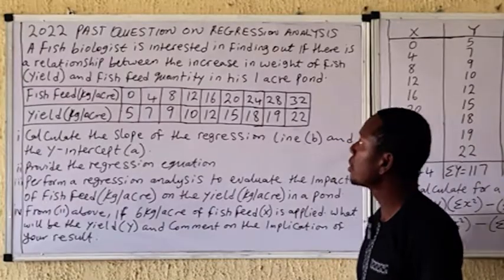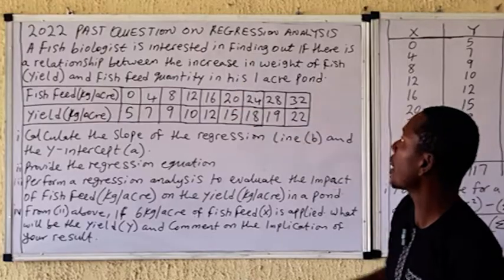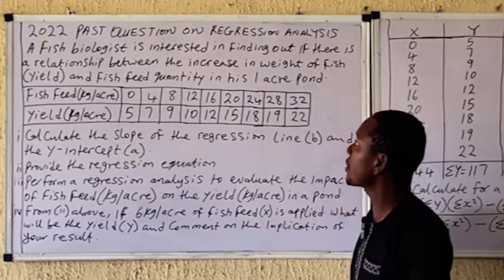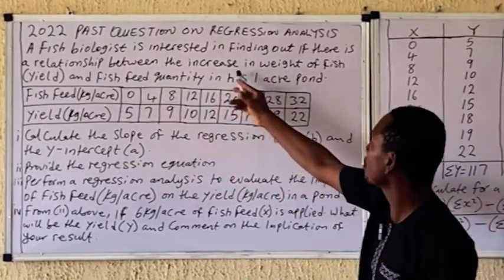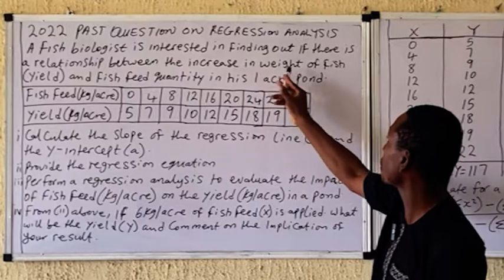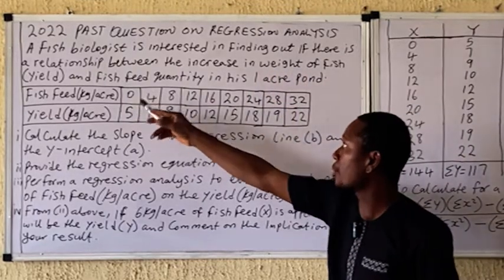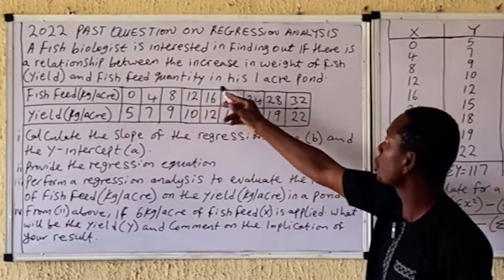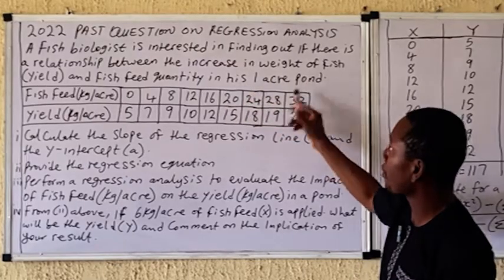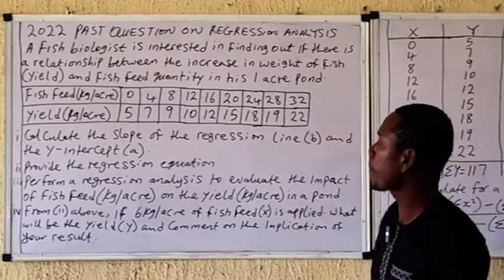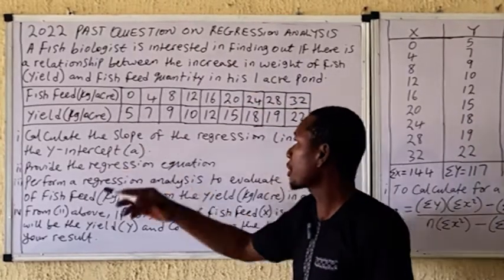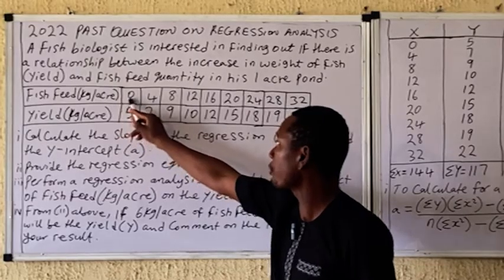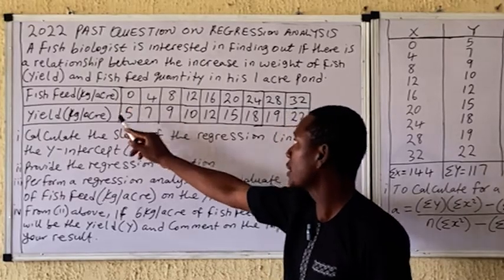Let's take this question. A fish biologist is interested in finding out if there is a relationship between the increase in weight of fish — that's the yield — and the fish feed quantity in each one-acre pond. The data collected is given below.